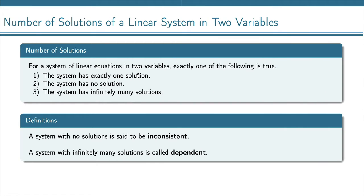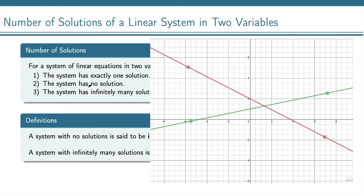The second possibility is where we have no solution. This means that graphically the lines do not touch each other at all. So this would be when you have parallel lines. If the lines are parallel, then there's no point of intersection, which means there's no solution.